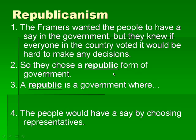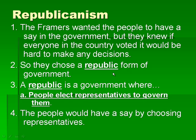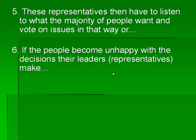The next principle is republicanism. The framers wanted the people to have a say in the government, but they had to figure out how to get everybody a voice. If every single person in the whole United States voted on every single issue, it would take forever to make any real decisions. So they chose a republic — a government in which people elect representatives to govern them. The people have the power because they get to choose the representatives, the person that is going to best represent them. These representatives have to listen to what the majority of people want and vote on issues that way.